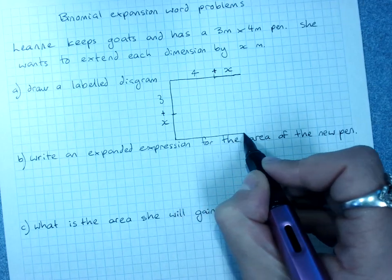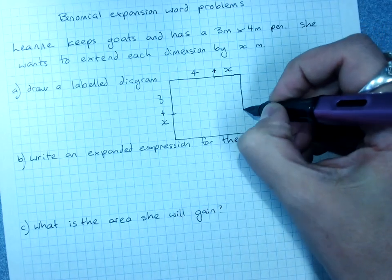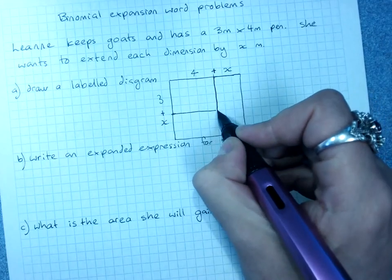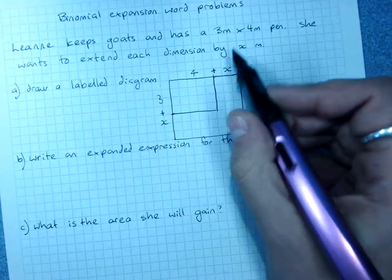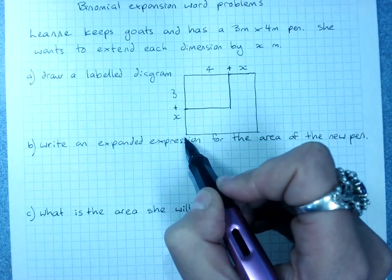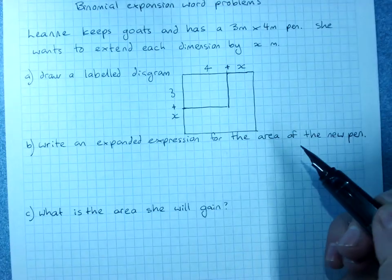So if you draw a diagram it can be much more clear what's happening. There's my original pen three meters by four meters. I'm expanding by x on that side and x on that side and I get a much bigger pen.